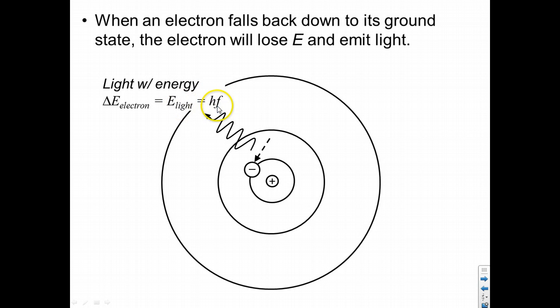And Bohr said, that light has an energy equal to h, Planck's constant, times f, the frequency of the light.